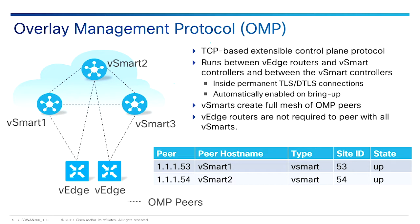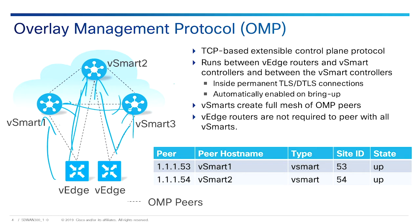OMP is the routing protocol we're going to use for establishing and maintaining the control plane, and for exchanging routing policy and management information between the V-Smart controllers and our V-Edge devices. It's enabled by default on all devices — V-Smart and V-Edge — and will automatically start initiating OMP peering sessions between themselves and V-Smart. The V-Edges just make a few connections back to a handful of V-Smart controllers, which then communicate among each other and distribute that information back down.